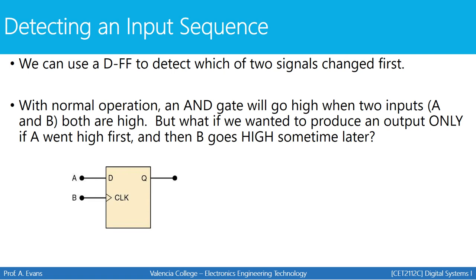If you look at this D flip-flop, let's connect two inputs: input A, the person on the first floor, and input B, the person on the fifth floor. Input A goes into the D input of the flip-flop, and signal B acts as the clock signal. Remember that whenever the clock signal makes a positive transition, Q will be whatever D is. The person pressing button B may not produce a perfect 50% duty cycle, but each time they press the button, the transition from 0 to 1 is all we need to trigger the flip-flop.